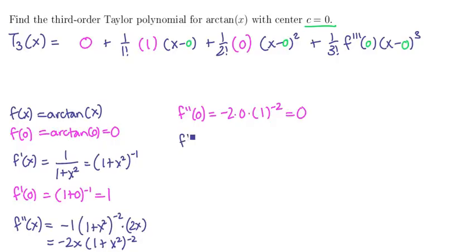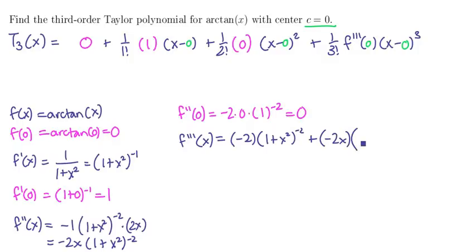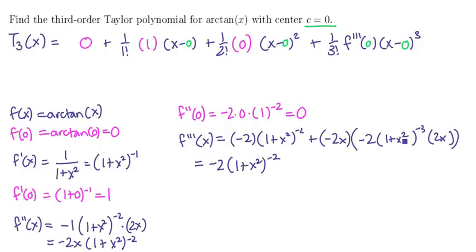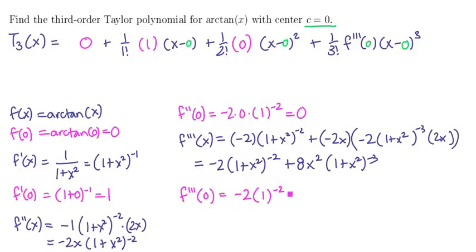Our last coefficient requires the third derivative, which involves the product rule. We take the derivative of the first, which is negative 2, times the second, 1 plus x squared to the minus 2, plus the first term negative 2x times the derivative of the second: minus 2 times 1 plus x squared to the minus 3 times 2x. Cleaning that up, we get negative 2 times 1 plus x squared to the minus 2 plus positive 8x squared times 1 plus x squared to the minus 3. Plugging in 0 gives negative 2 times 1 to the negative 2 plus 8 times 0 times 1 to the negative 3, which is a grand total of negative 2. And so that goes right here.